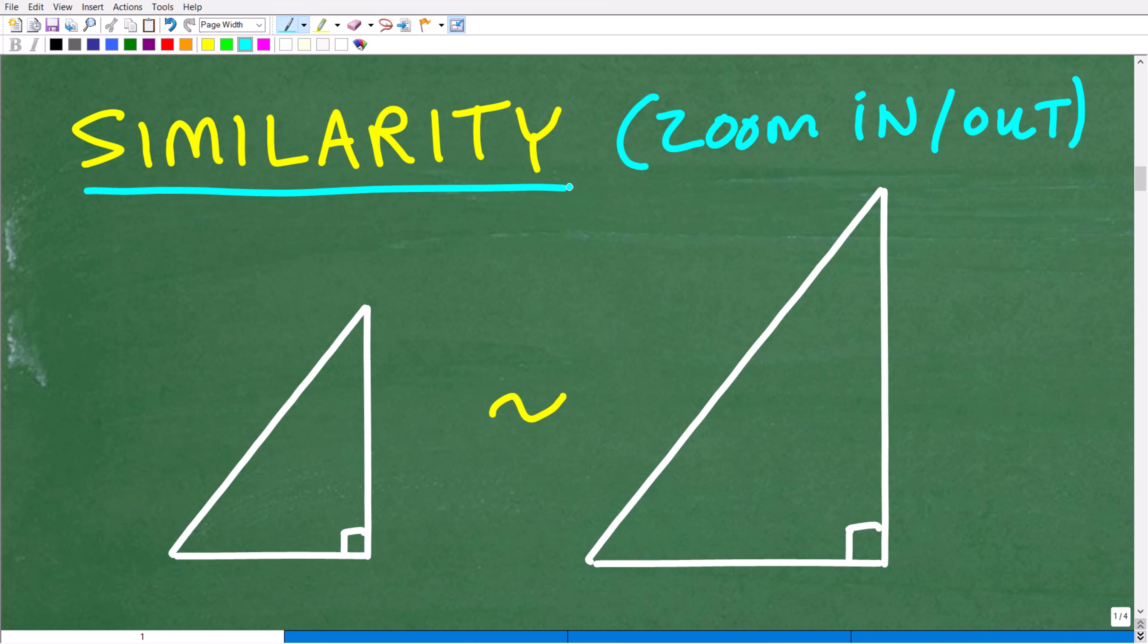Well, this is the concept of similarity, and it could be anything. It could be other figures that we can zoom in or zoom out. So it's not just triangles. But in geometry, the notation for similarity is this little squiggly thing right here. And that's not to be confused with congruency, which is a totally different deal. Congruent figures have the exact same shape and size.